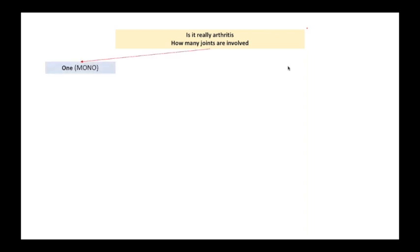If the answer is one, you are dealing with a monoarthritis. If the answer is two to four, you are dealing with an oligoarthritis. If the answer is more than four, you are dealing with a polyarthritis which gives a completely different algorithm.